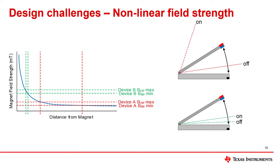As for device B, it is less sensitive, with both BOP and BRP bounds set at a much higher field strength. As the magnet field strength curve slope is steeper in these BOP and BRP bounds, the distance between on and off states is significantly smaller.